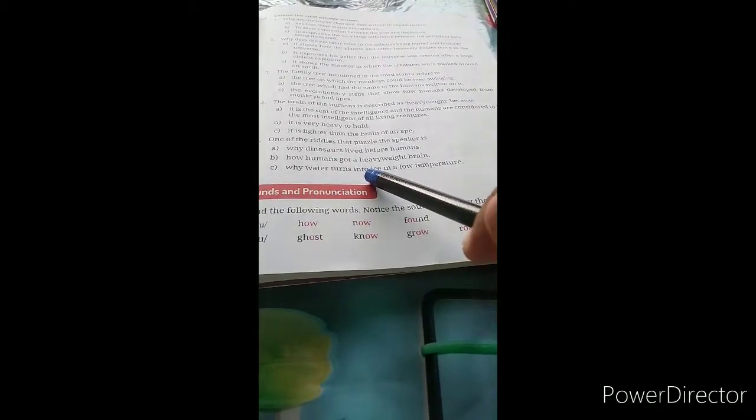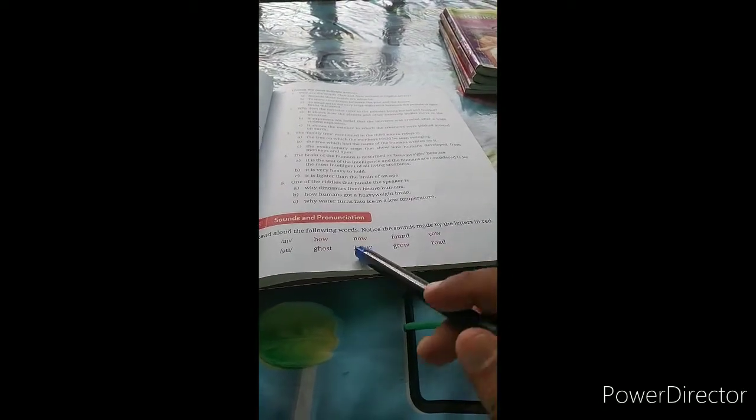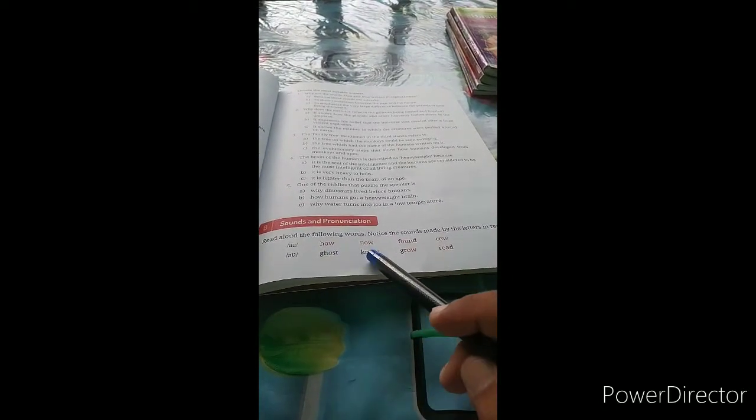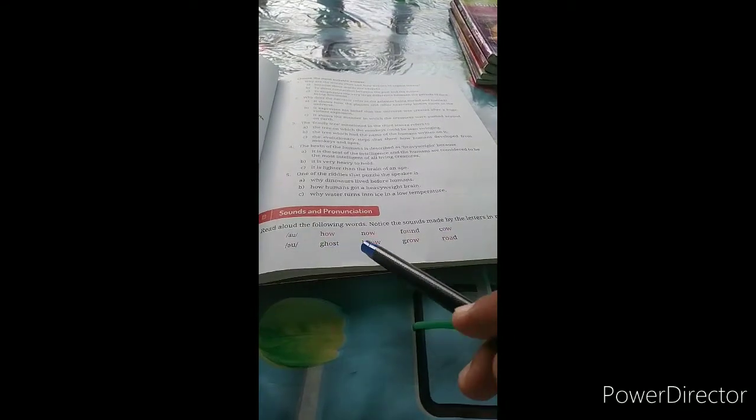Now let's look at section B: Sounds and Pronunciation. Read aloud the following words, notice the sounds made by the letters in red. जो letters red mark हुआ है उसके sound पर ध्यान देना है। The words are: how, now, found, cow, ghost, know, grow, road.